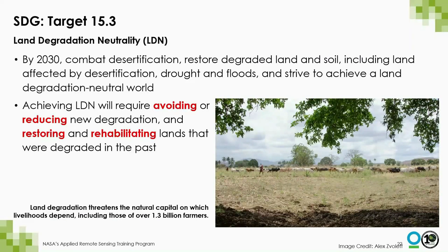We'll focus on Target 15.3 and Indicator 15.3.1. Target 15.3 states that by 2030, we must combat desertification, restore degraded land and soil — including land affected by desertification, drought, and floods — and strive to achieve a land degradation neutral world. Land degradation is the reduction or loss of the biological or economic productivity and complexity of rain-fed cropland, irrigated cropland, range, pasture, forest, and woodlands, resulting from land uses or processes arising from human activities.